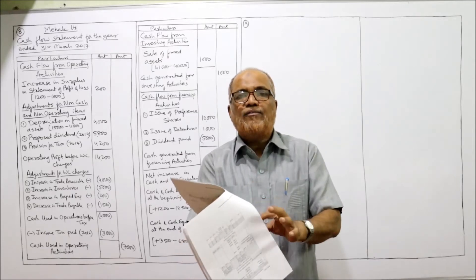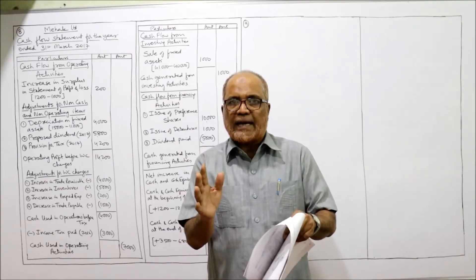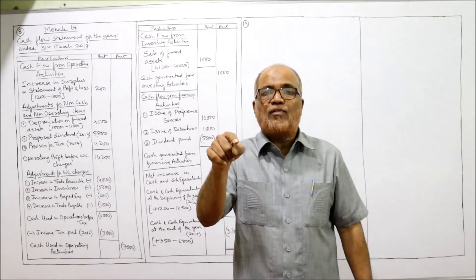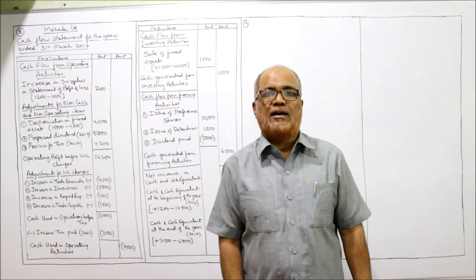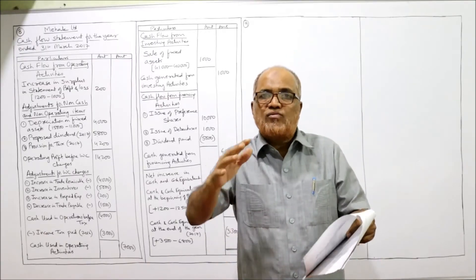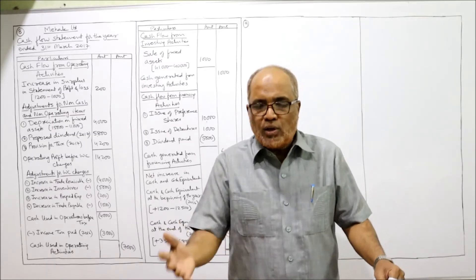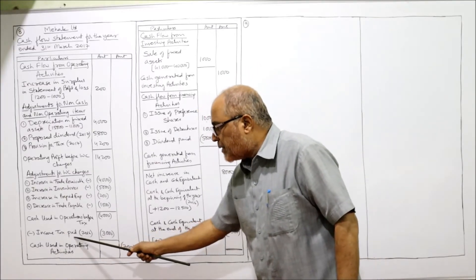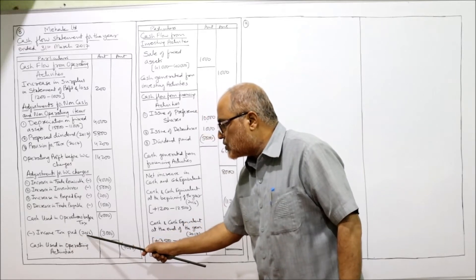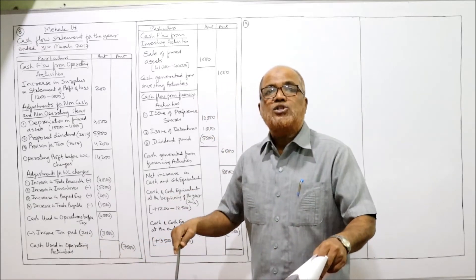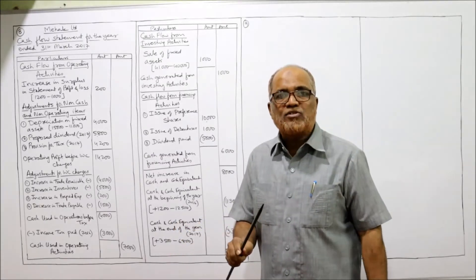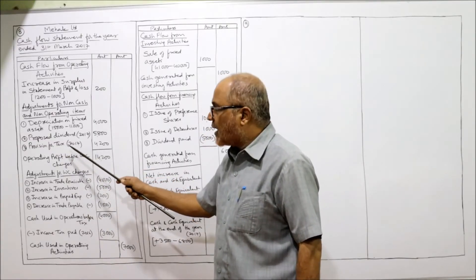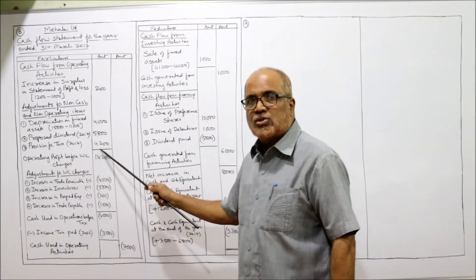Provision for tax: last year 3,000, current year 4,200. The treatment is: we assume last year's provision for tax will be paid during the current year, and current year's provision for tax will be paid in the next year. So last year's provision for tax of 3,000 is the income tax paid — income tax paid 2016: 3,000. Current year's provision for tax is a non-cash item — provision for taxation 2017: 4,200.